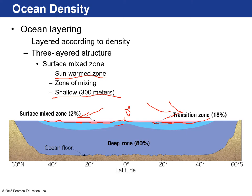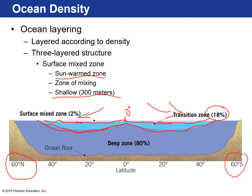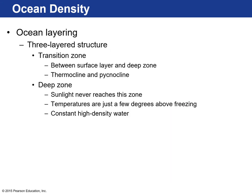Below that is the thermocline/pycnocline layer, called the transition zone, making up about 18 percent of the ocean. It tapers off at high latitudes, thickens at mid-latitudes, and thins at the equator. The transition zone is beneath the surface layer and above the deep zone — this is where the thermocline and pycnocline are, with drastic decreases in temperature and increases in density.